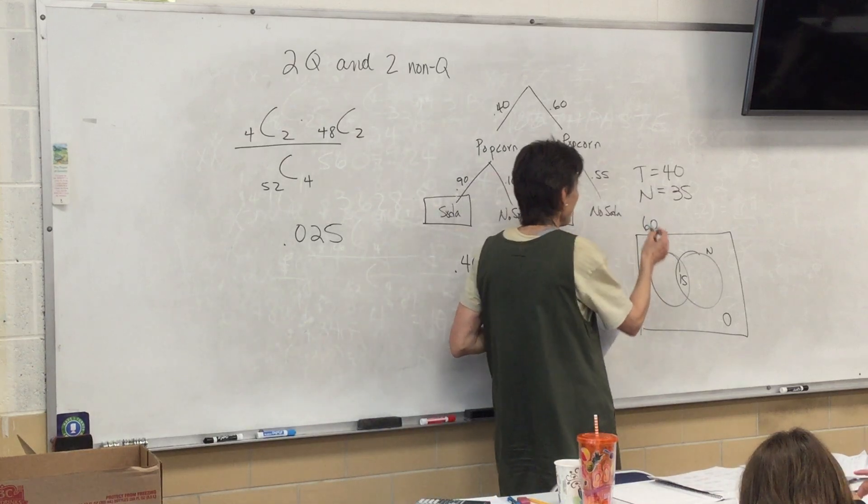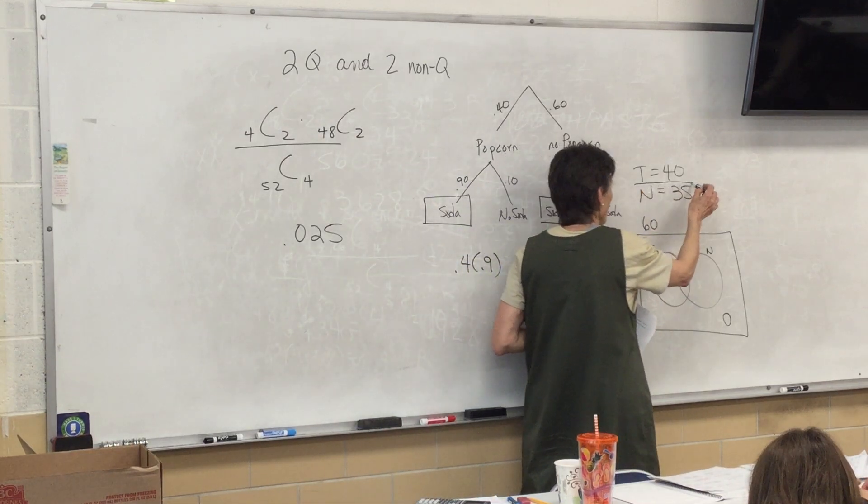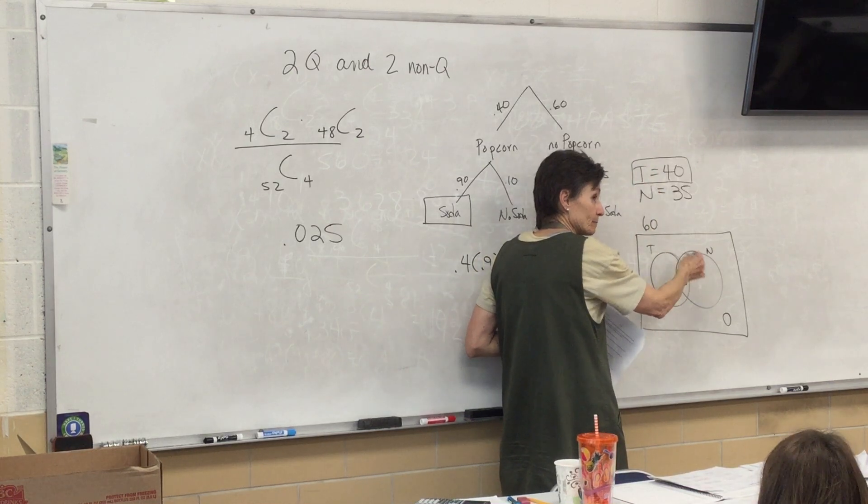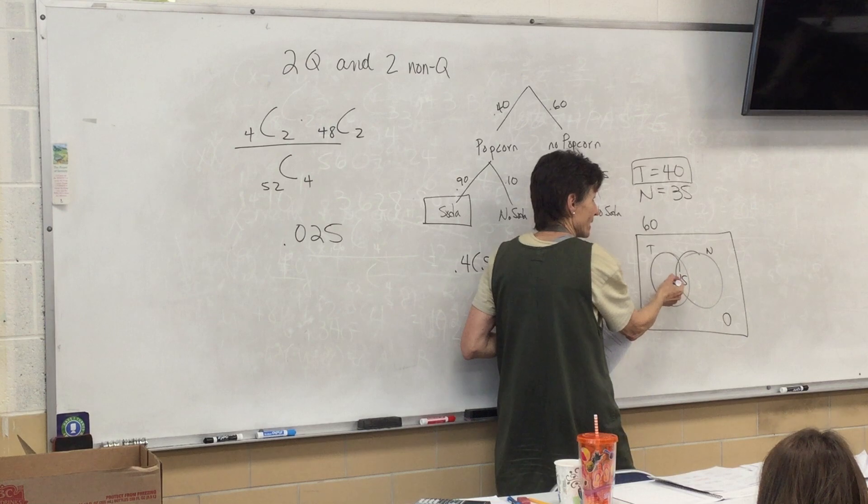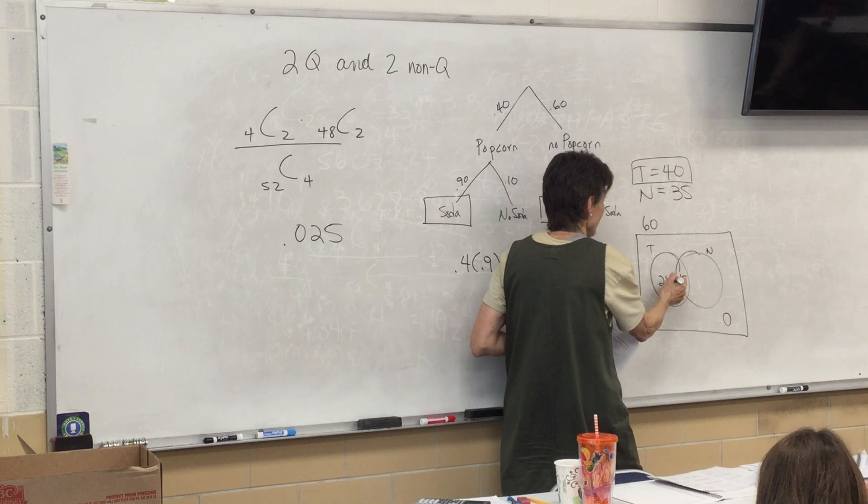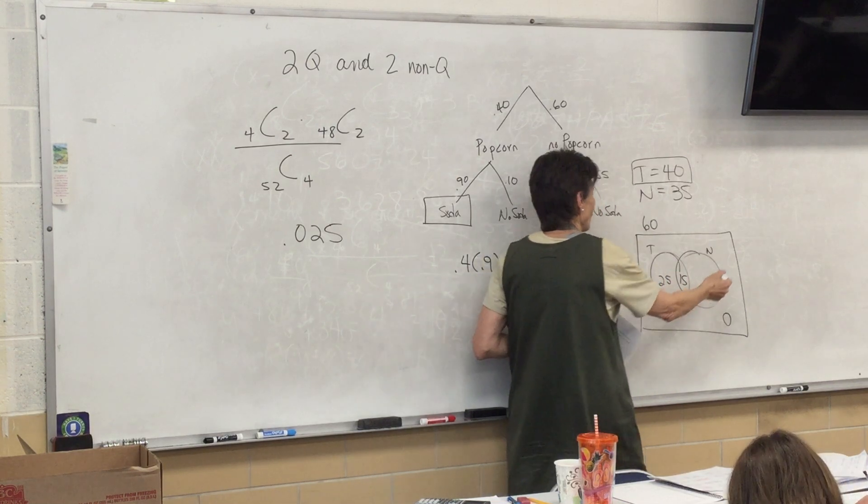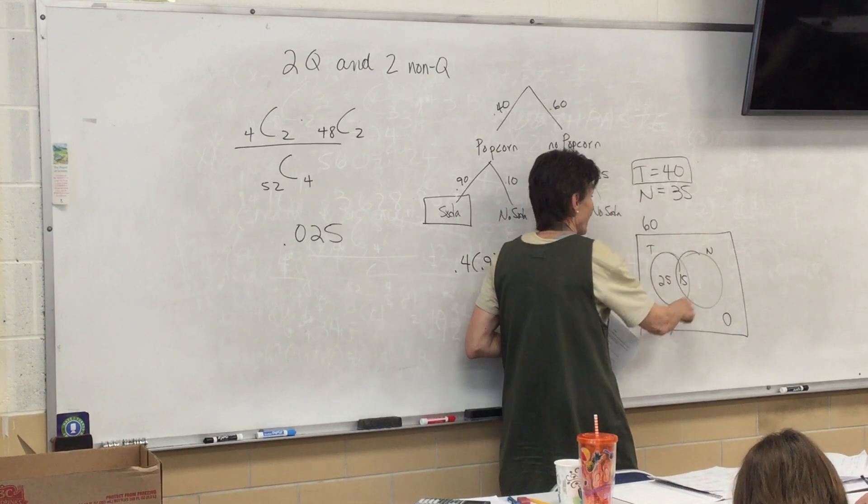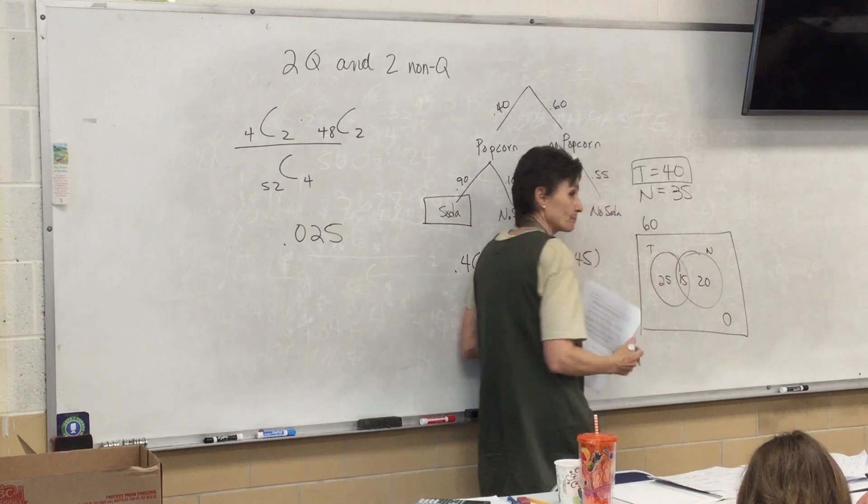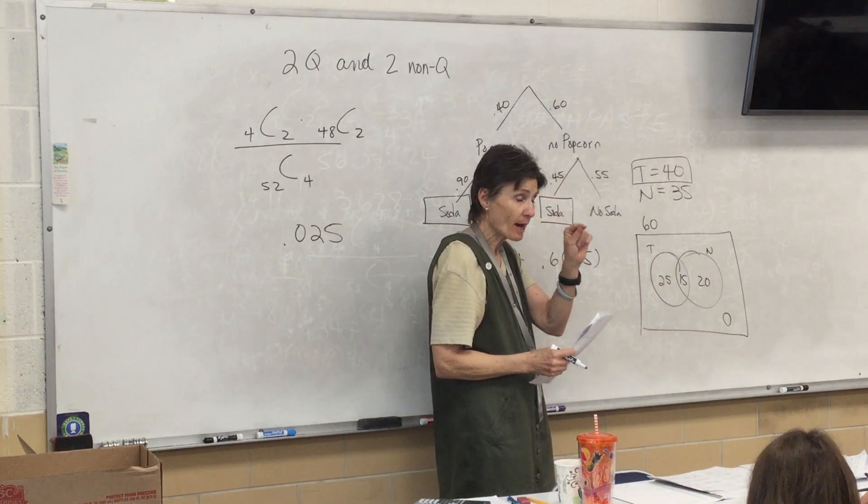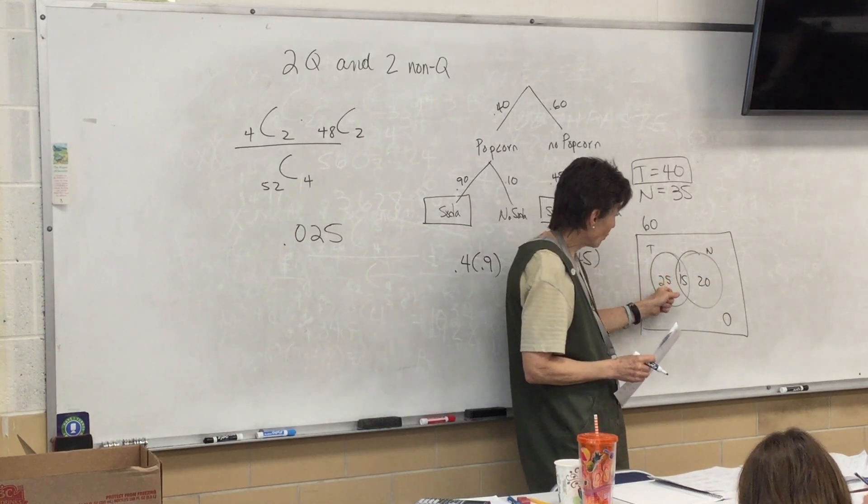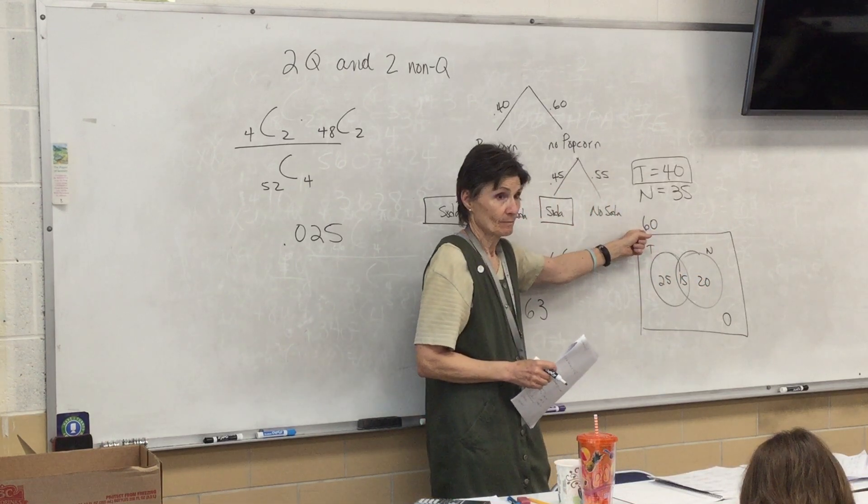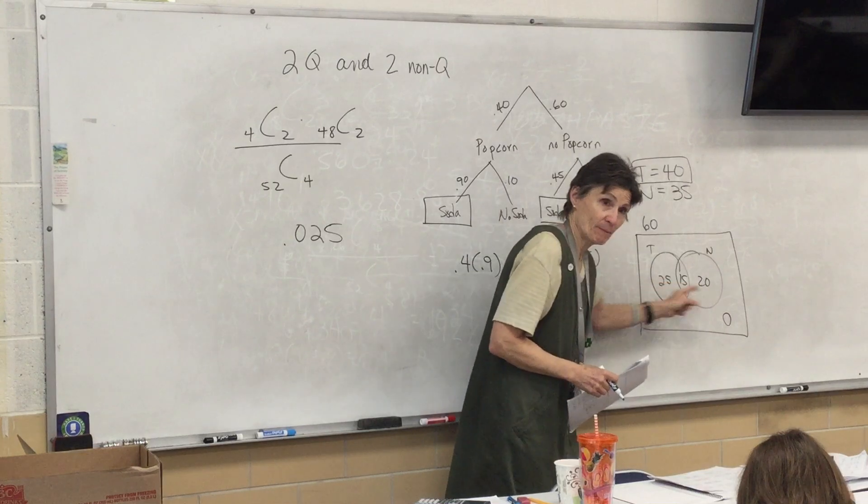Now, keeping in mind that the whole T circle is 40, this much must be 25. And if the whole N circle is 35, this must be 20. And as a check, if you add 25, 15, and 20, you better get 60. That's supposed to be 20.